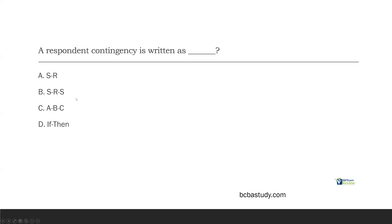A respondent contingency is written as what? Respondent conditioning is based on antecedent stimuli — an antecedent stimulus causes a reflex. Operant behavior and operant conditioning is based on consequences that control future behavior. So a respondent contingency — how is that written? It's not a three-term contingency because there are no consequences in respondent contingencies, and it's not an if-then statement because the 'then' is a consequence. A respondent contingency is written as S-R — stimulus and reflex. The sun is bright, you blink. Pepper goes up your nose, you sneeze. These aren't maintained by consequences. A respondent contingency is a two-term contingency written as S-R.